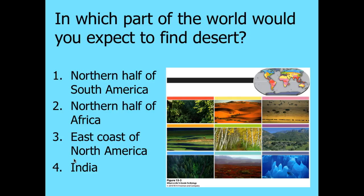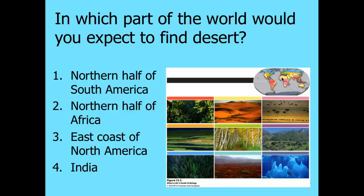The part of the world where you would expect to see deserts — following the map here — the northern half of South America, not so much, but the northern half of Africa, yes indeed, has a tremendous amount of desert. So number two would be the best answer. The east coast of North America has no desert, and the Indian subcontinent has a small amount of desert, but certainly not all of India.